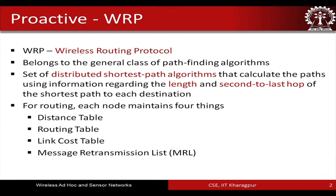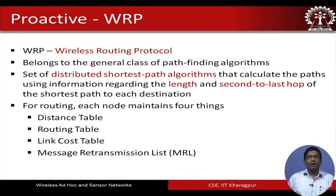The next routing protocol is the proactive routing protocol WRP, which stands for Wireless Routing Protocol. It belongs to the general class of path-finding algorithms, and basically finds a set of distributed shortest path algorithms that calculates paths using information regarding the length and the second-to-last hop of the shortest path to each destination.